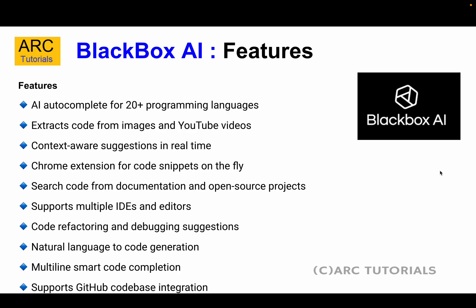Some of the features of Blackbox AI include AI autocomplete for 20 plus programming languages, and it extracts code from images and YouTube videos. It provides context-aware suggestions in real time. Blackbox AI comes as a Chrome extension and can also be used in Visual Studio Code as a plugin. It can search code from documentation and open source projects, and supports multiple IDEs including Eclipse, Visual Studio Code, and all JetBrains IDEs.